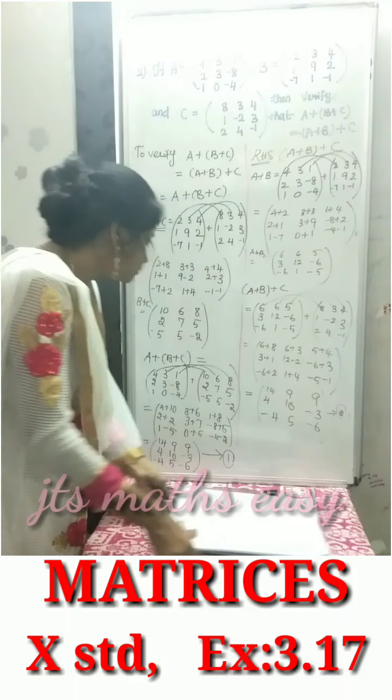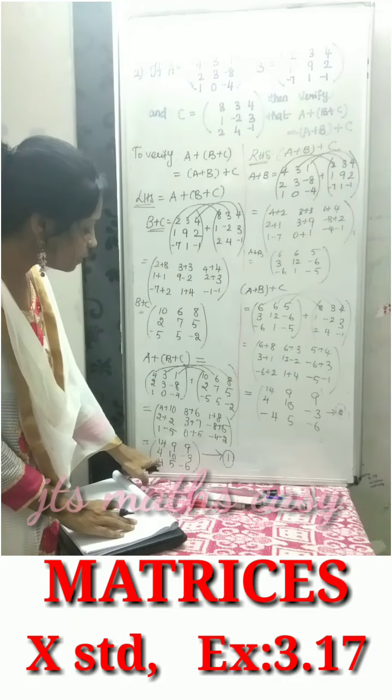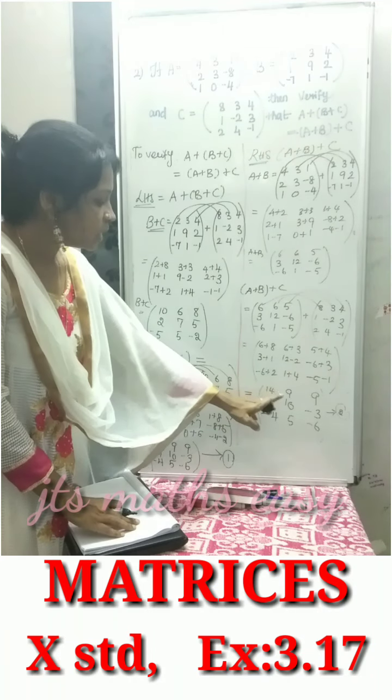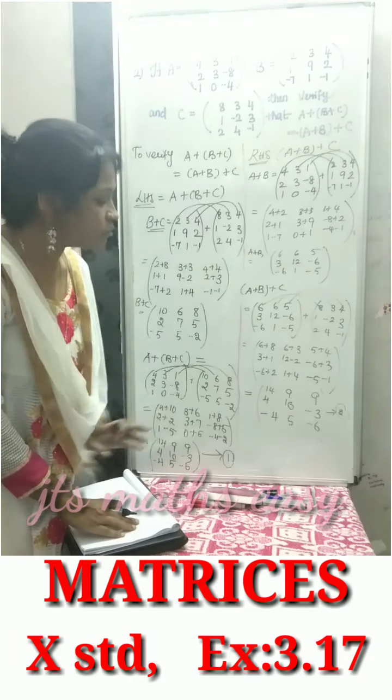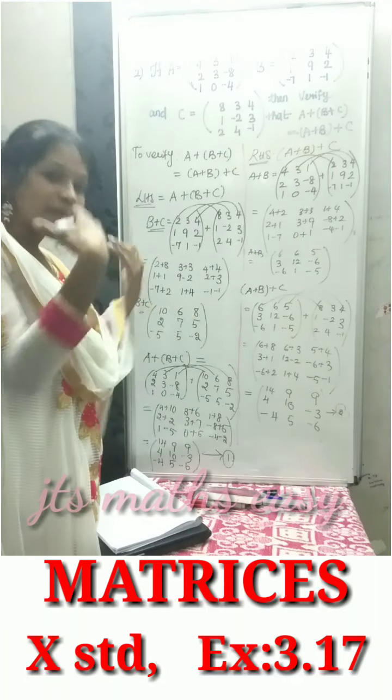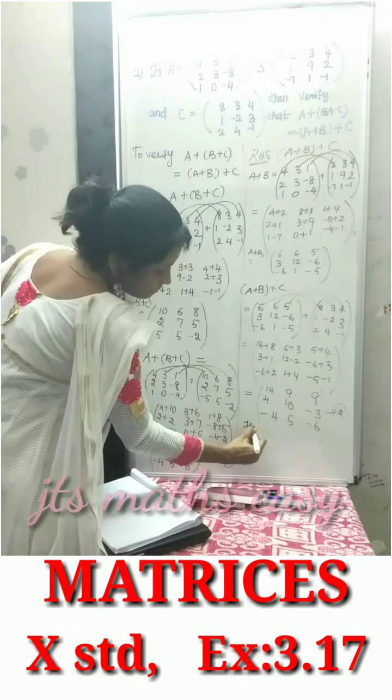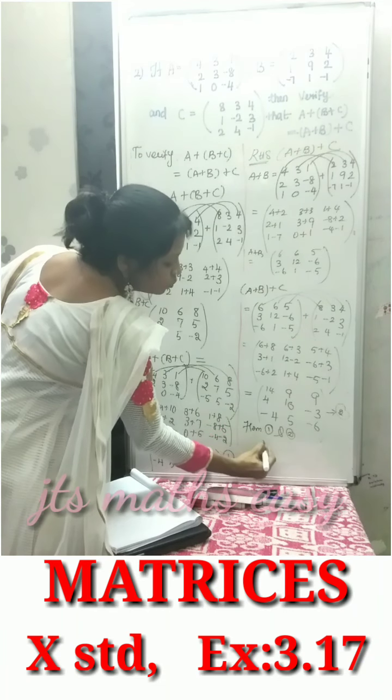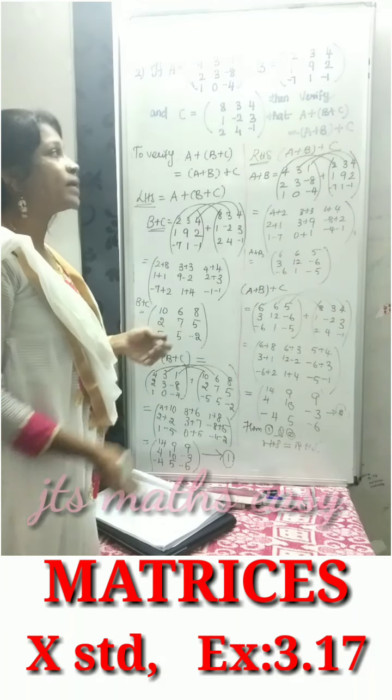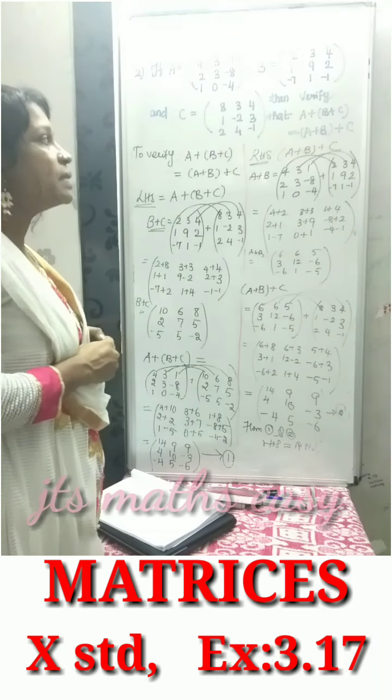Now compare both equations. Both have the same answer. Here: 14, 9, 9, 4, 10, minus 3, minus 4, 5, minus 6. And here also: 14, 9, 9, 4, 10, minus 3, minus 4, 5, minus 6. From equations 1 and 2, we conclude that LHS equals RHS. Hence, we have verified that A plus B plus C equals A plus B plus C.